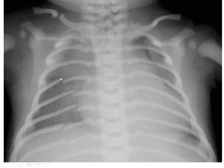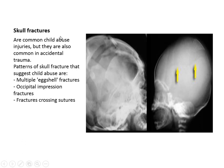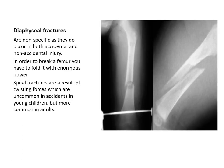Here is an example of a child with multiple rib fractures. Long bone and skull fractures are common in child abuse injury but are also common in accidental trauma. Patterns suspicious for non-accidental injury include multiple axial fractures, occipital impression fractures, and fractures crossing the suture line — including multiple skull fractures. Axial fractures are not specific and are very common in accidental injury; they can occur in any long bone.